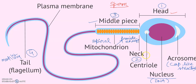The middle piece consists of spiral mitochondria that provide energy. These are the basics of the sperm structure. Don't forget to learn this structure for your board examination, because this is a very important topic for any academic or competitive exam.